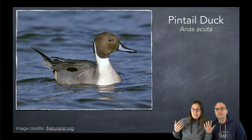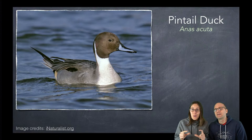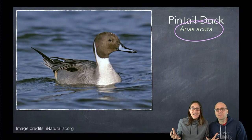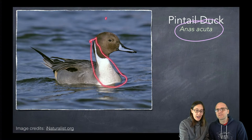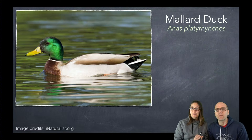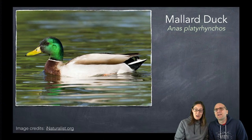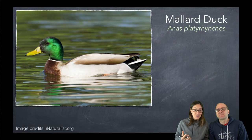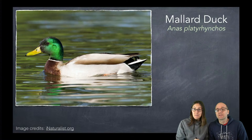For example, the pintail duck we call a species of duck, and it has its own scientific name, Anas acuta. You can see this duck has a blue bill, a white patch of feathers, and brown feathers on its head. It looks very different than the mallard duck. The mallard doesn't have that sharp pin tail, and it has a different scientific name, Anas platyrhynchos. It has a green head, brown feathers on the front, and a yellow bill. Very different.